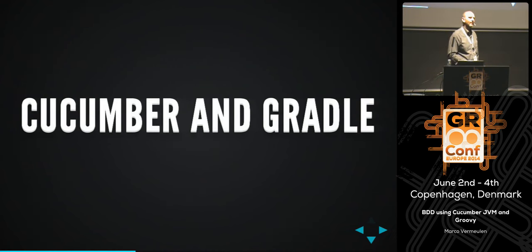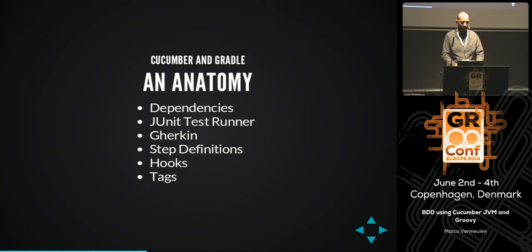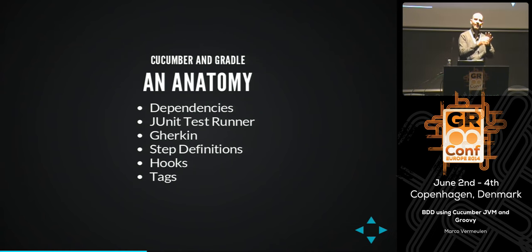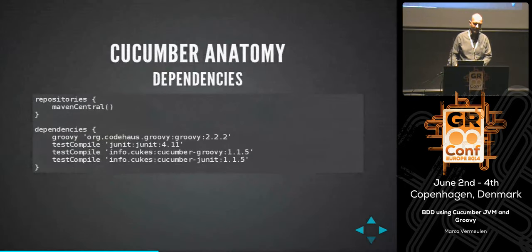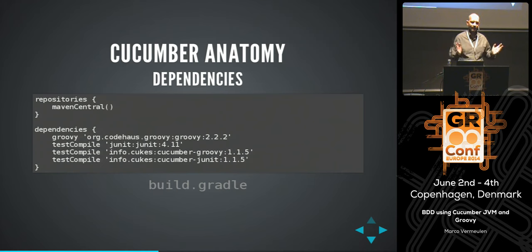Let's look at how to bring Cucumber into a simple Gradle project. We need to add dependencies to our build file, introduce a JUnit test runner since Cucumber is built on top of JUnit, add some Gherkin — the lightweight markup for your specification — and step definitions, which are little snippets of Groovy that sit behind the executable specs and call into your application. Inside your build.gradle, apart from having Groovy, you need JUnit, a Cucumber-Groovy bridge, and a Cucumber-JUnit bridge, and it'll pull in all transitive dependencies and just start working.